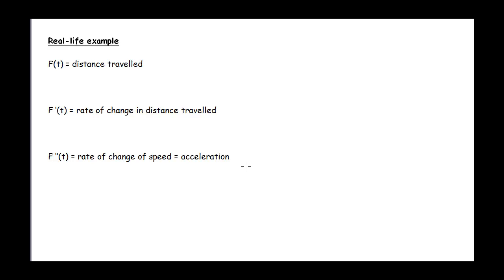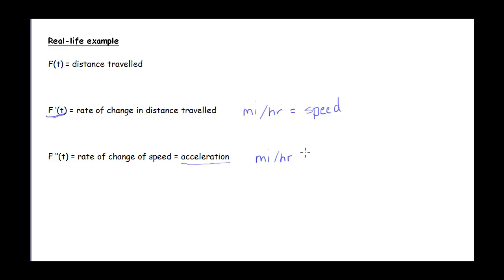Let's look at a real life example. If our function f of t is the distance traveled, then our rate of change in distance traveled is that derivative. If our function is in miles, this would be in miles per hour — so this is our speed. The second derivative is the rate of change of the speed, so this is how fast you're accelerating or decelerating. In terms of units, this would be miles per hour per hour, or miles per hour squared. So this is our acceleration — how fast is that speed changing?